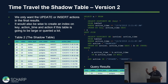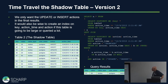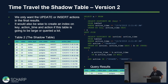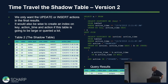Version two time travel is much more complex — not as nice — but your shadow table will be smaller. Creating an index on key, action_time, and action will help performance, especially if the shadow table gets very large.